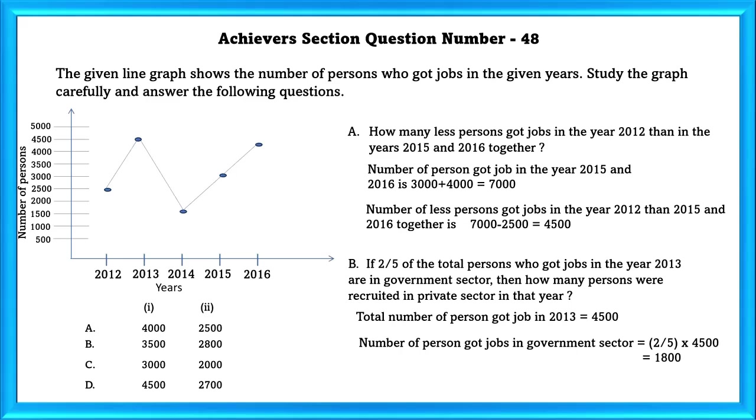Number of persons who got their job in government sector is equal to 2 by 5 into 4,500, which is equal to 1,800. Number of persons recruited in private sector is equal to 4,500 minus 1,800, that is equal to 2,700. Which leads us to our answer as D.